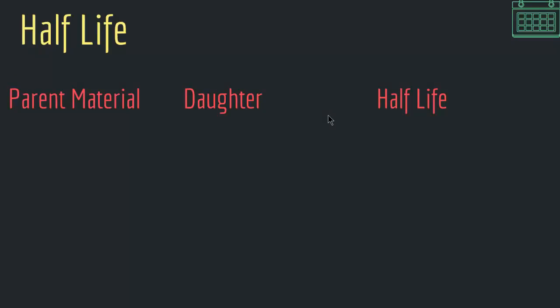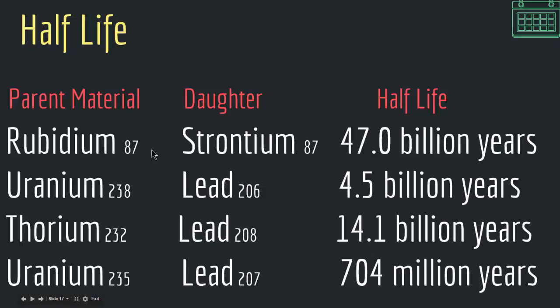Let me give you examples of other materials that are used in numerical dating. We have rubidium-87 that turns into strontium-87, and the half-life of that is 47 billion years. So it takes 47 billion years for one pound of rubidium-87 to turn into half, and the other half turning into strontium-87. And if we have a rock that contains half rubidium and half strontium, we know that that rock must be 47 billion years.